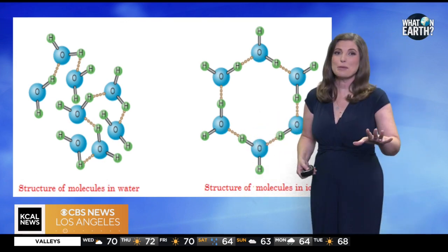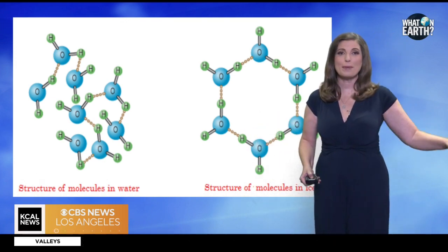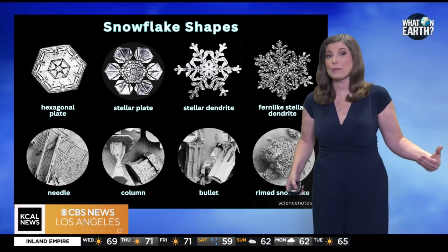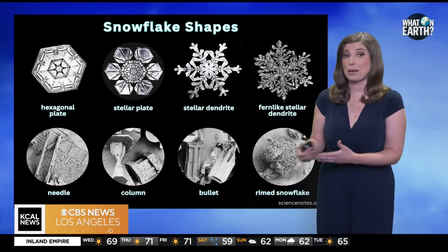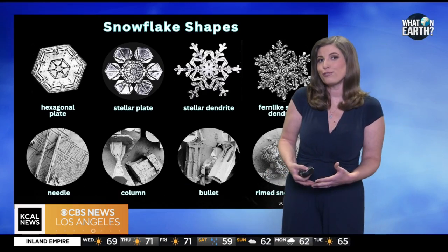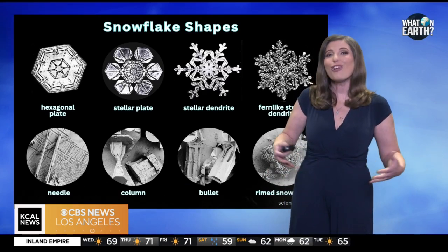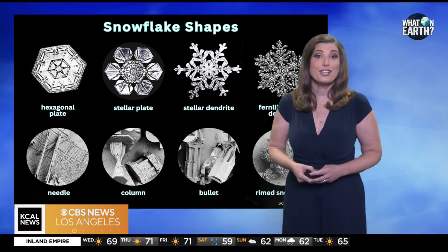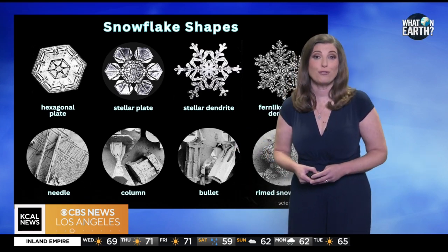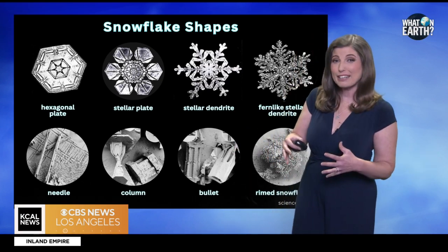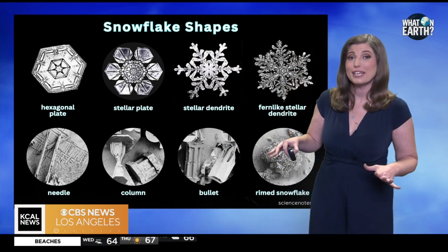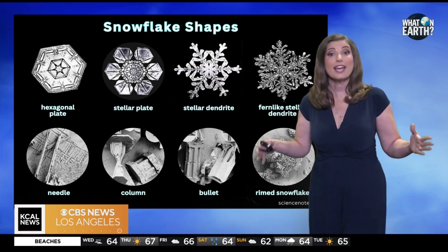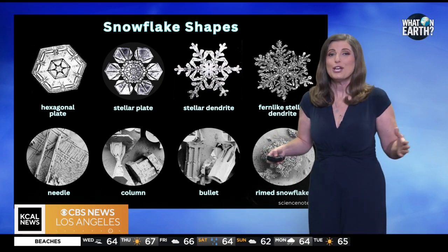The shape depends on humidity and temperature as it is forming. Some temperature-humidity combinations produce flakes with long, needle-like arms. Other conditions produce flakes with wide, flat arms, and others produce thin branching arms.